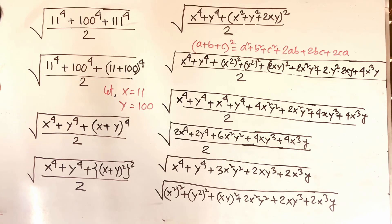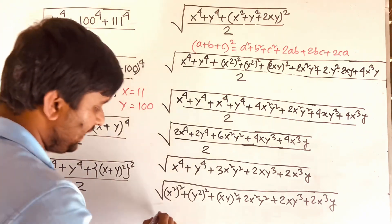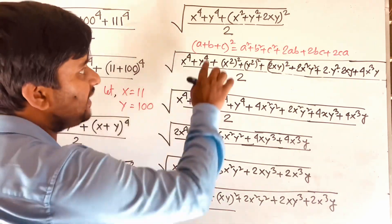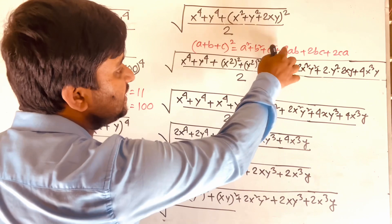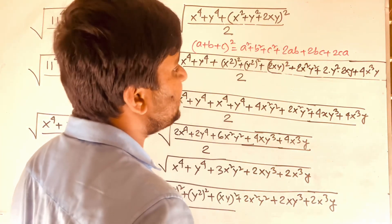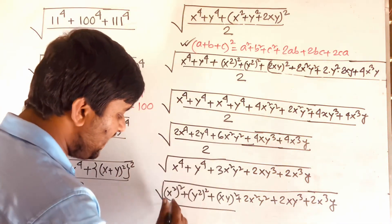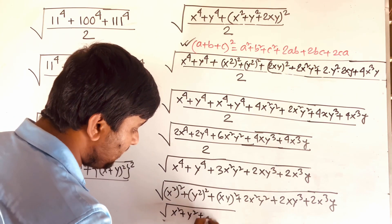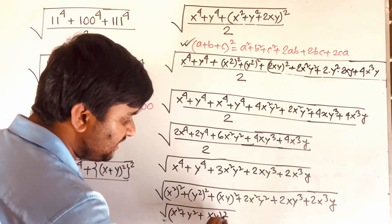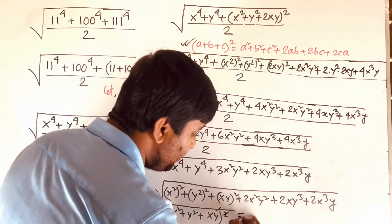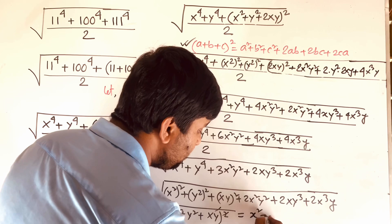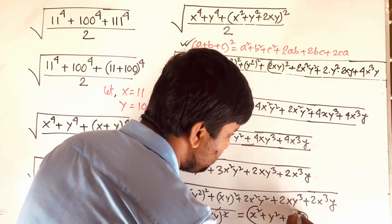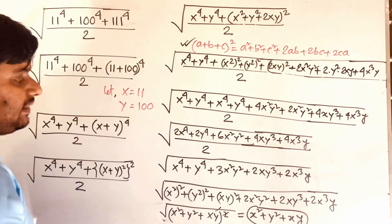I can see easily, applying the (a plus b plus c) squared formula where a is x squared, b is y squared, and c is xy, this gives (x squared plus y squared plus xy) squared. So the square root cancels, and we find x squared plus y squared plus 2xy.